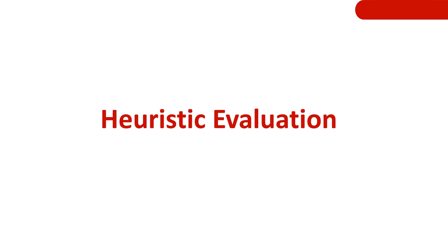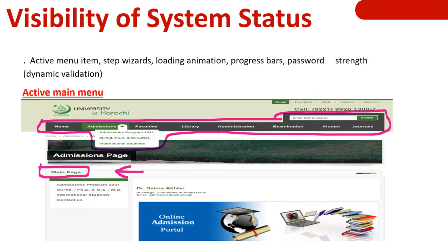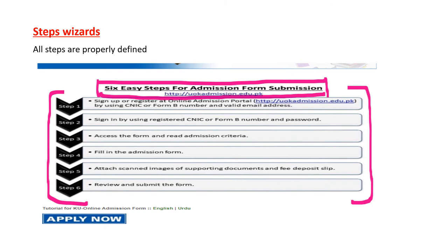The third point of heuristic evaluation: the main page includes admission programs for 2021 — MPhil, PhD, MS — and international students can also reach out through the website. All visa steps are properly defined for taking admission, and the university provides six easy steps for admission form submission along with video links.